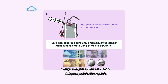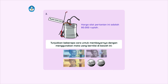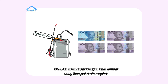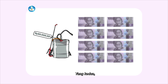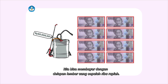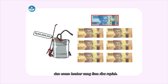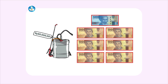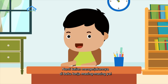Harga alat pertanian ini adalah Rp80.000. Tunjukkan beberapa cara untuk membayarnya dengan menggunakan mata uang bernilai di bawah ini. Yang pertama, kita bisa membayar dengan 1 lembar uang Rp50.000 dan 3 lembar uang Rp10.000. Yang kedua, kita bisa membayar dengan 8 lembar uang Rp10.000. Atau, kita bisa membayar dengan 1 lembar uang Rp50.000 dan 6 lembar uang Rp5.000. Seperti itu, teman-teman. Mudah kan? Nanti, kalian mengerjakannya di buku kerja masing-masing ya.